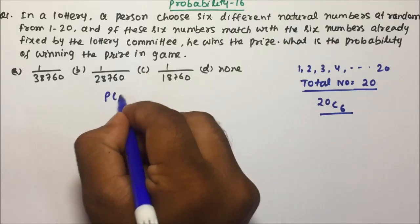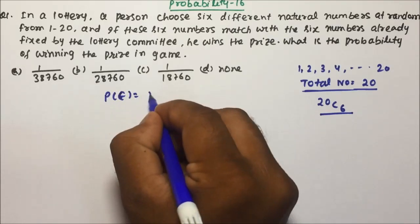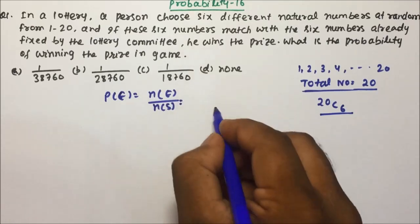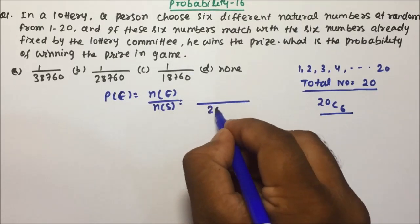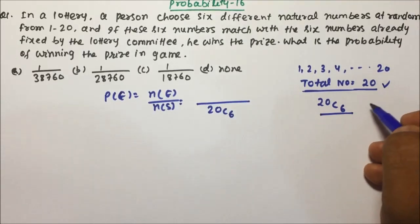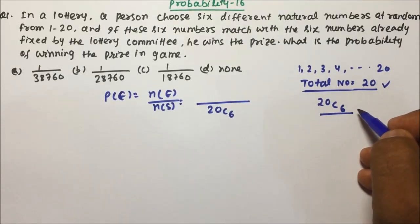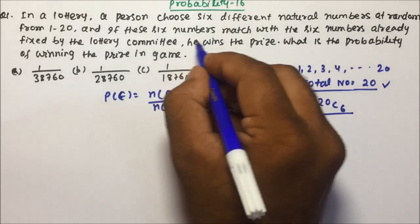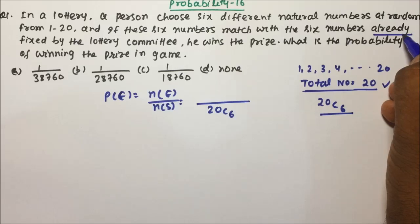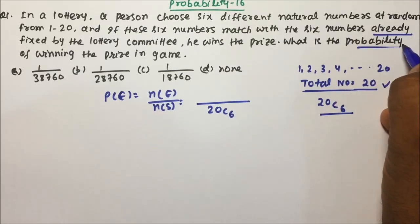The probability formula is P(E) = N(E) divided by N(S). So the total outcome N(S) will be 20C6, because out of 20 natural numbers you are going to select six different natural numbers. Now, if the six numbers match with the six numbers already fixed by the lottery committee, he wins the prize. What is the probability of winning the prize in this game?